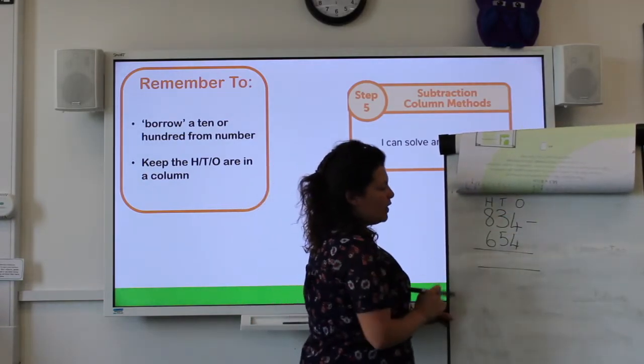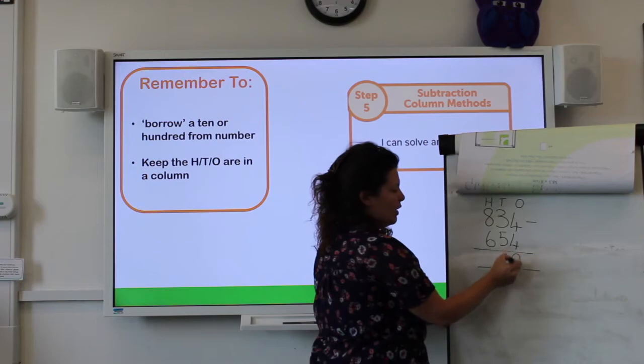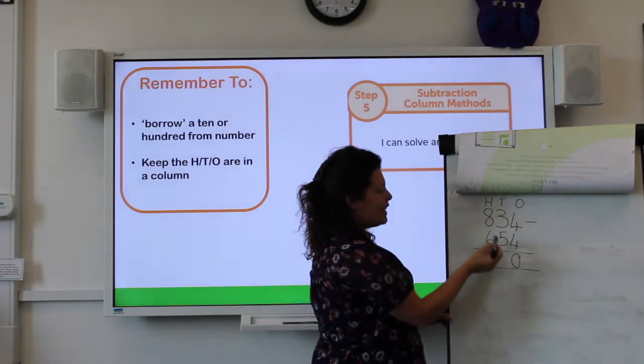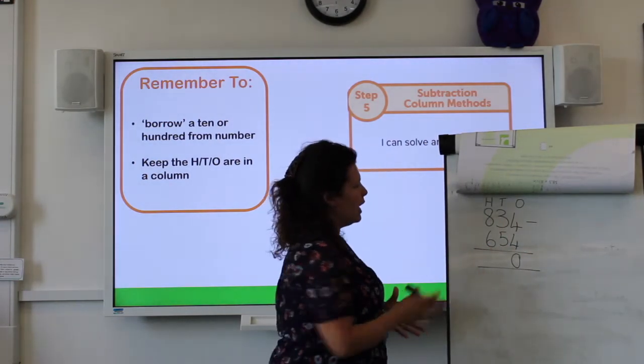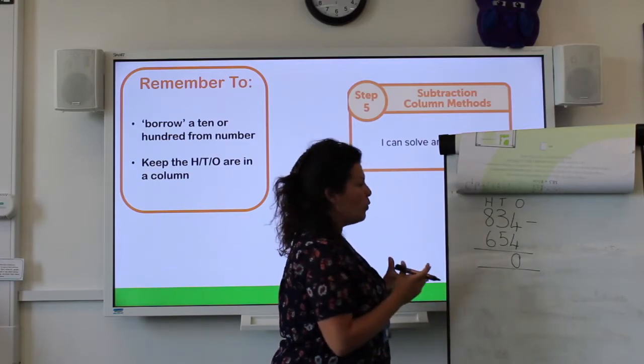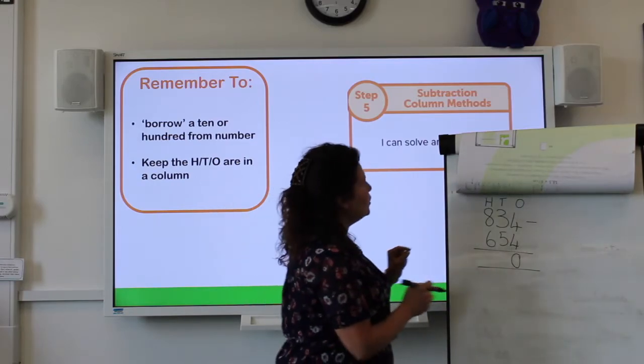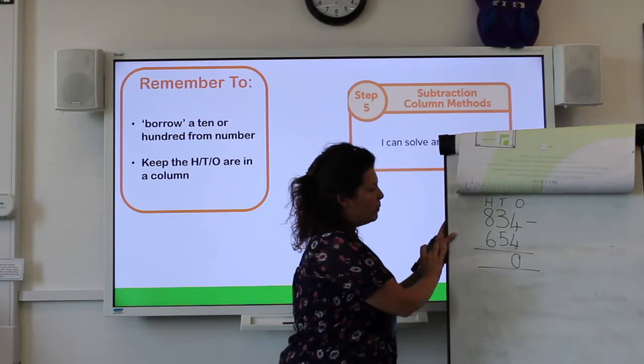Okay, so we're going to be thinking and looking at those hundreds, those tens, and those ones. 4 take away 4, fairly straightforward, that's 0. 3 take away 5, we can't do that because that's too small. So what we're going to do is we're going to borrow a 10 from the 100.